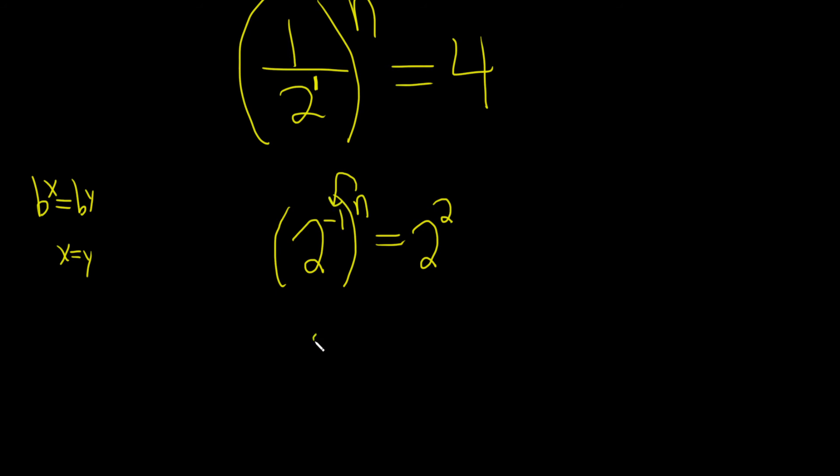n times negative 1 is negative n. And then here we have 2 squared. So now we have 2s on both sides as our base, so we can drop the 2s. So negative n is equal to 2. Then just dividing by negative 1 will give us n equals negative 2.